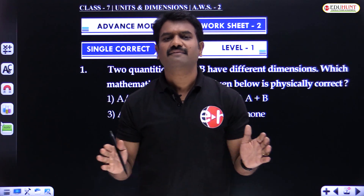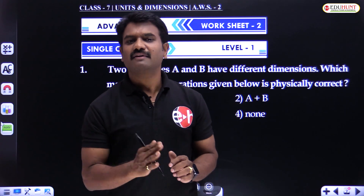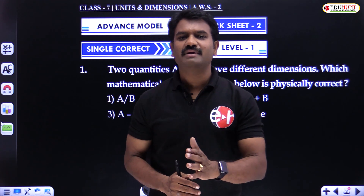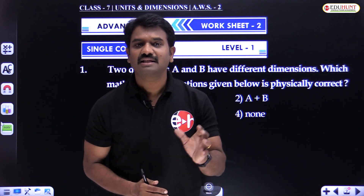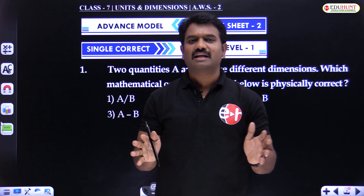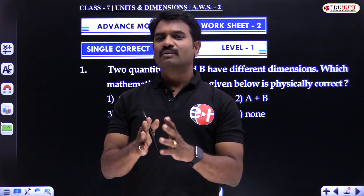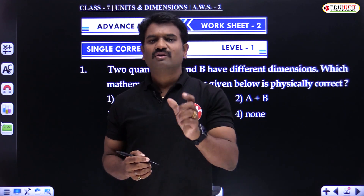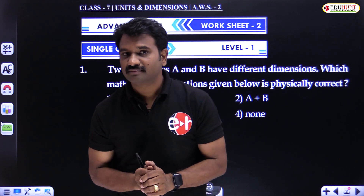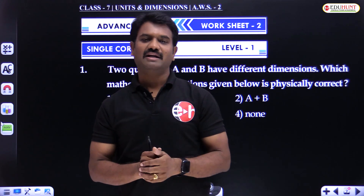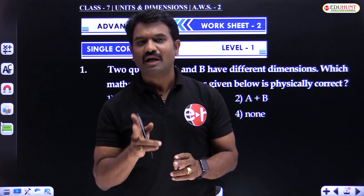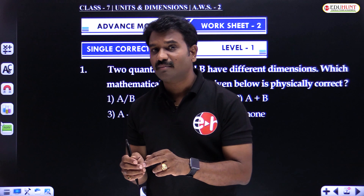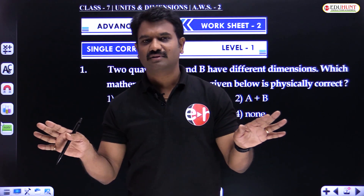Principle of homogeneity — the name itself says 'homo' means same. For example, two mangoes plus two mangoes equals four mangoes. Two apples plus two apples equals four apples. Two fruits plus two fruits equals four fruits.